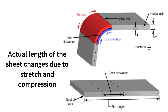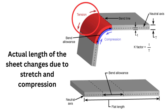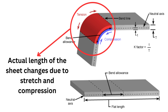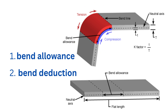When we bend the sheet metal, the material is compressed on the inside and there is tension or stretching on the outside. As a result, the length of the material changes, and this change in length is known as bend allowance or bend deduction. You can see in the picture that there is compression on the inside and the outside portion is in tension or stretch.